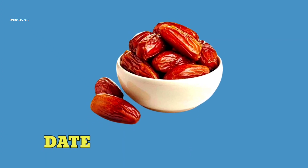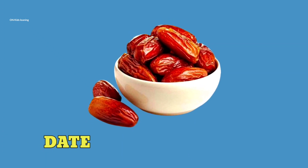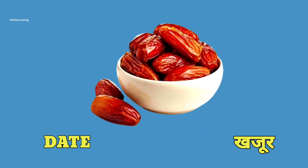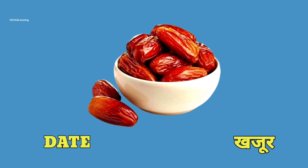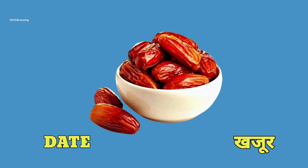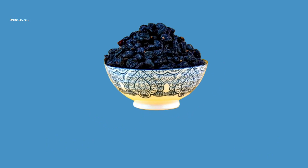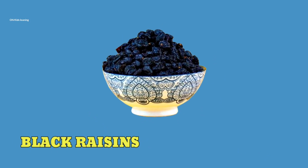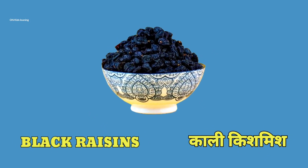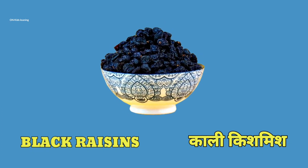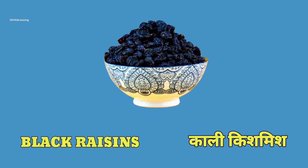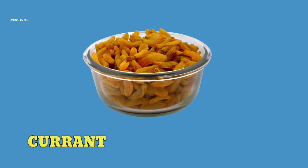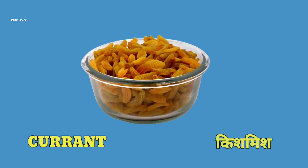Date — date means khajur. Black raisins — black raisins means kali kismis. Currant — currant means kismis.